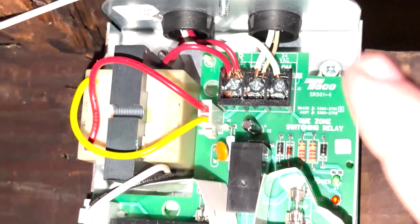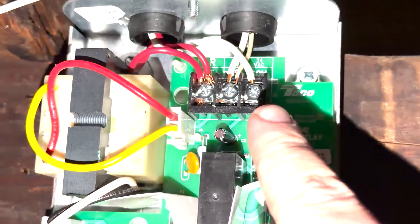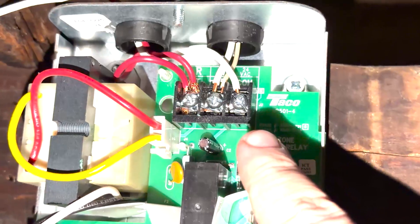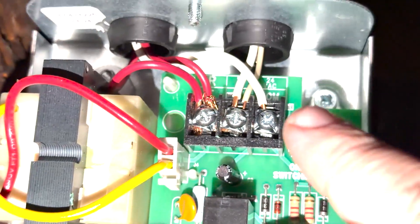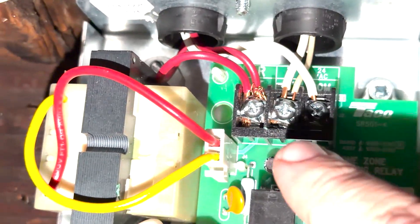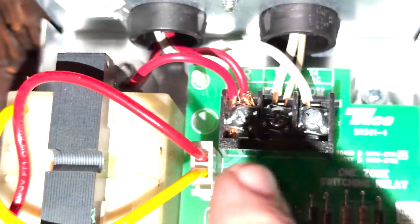Basically, you're going to take the white lead off the common port of the transformer, which is here, this white one, and you're going to connect it to this terminal here. Then you're going to take the red wire and you're going to connect it to red.